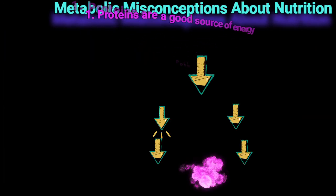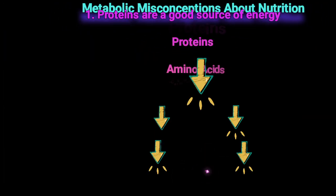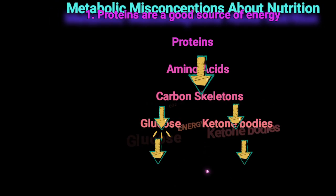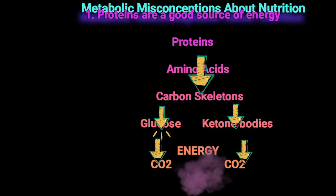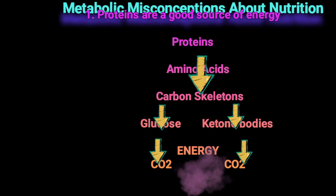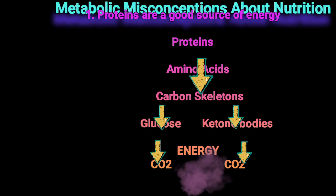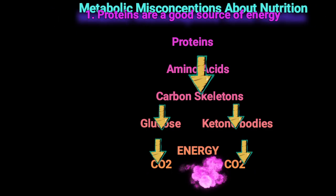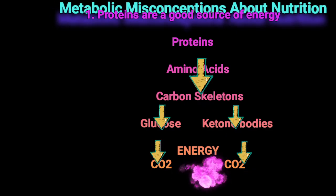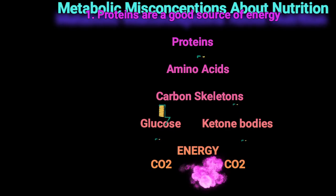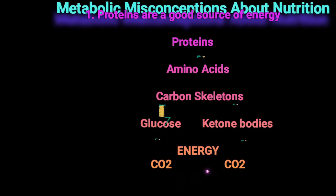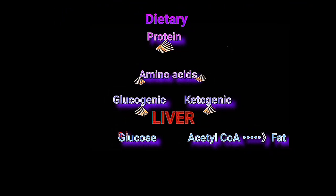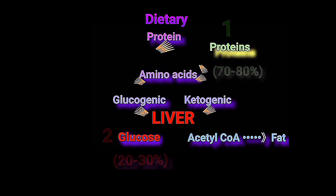The first metabolic misconception is that proteins are a good source of energy. To derive energy from proteins, they must first be catabolized to produce carbon skeletons, and then carbon skeletons will produce either glucose or ketone bodies, and then the latter two can produce energy through their catabolism to CO2.